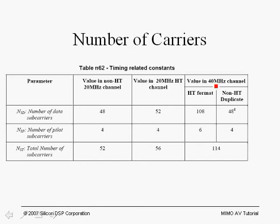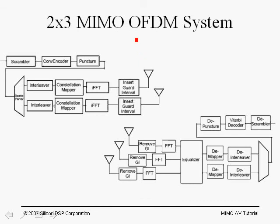In the case of 40 MHz operation with a high throughput format, 108 carriers are used. Notice that is more than twice 52, which would be 104. That's because when you aggregate the two 20 MHz bandwidths, you don't need to use all the guard interval frequencies and can allocate some of those to data. Also, you don't have to use all eight pilots and can use six pilots. The total number of carriers for a 40 MHz high throughput packet is 114.